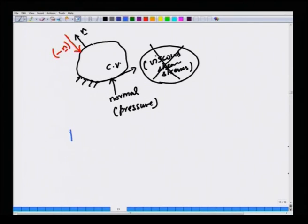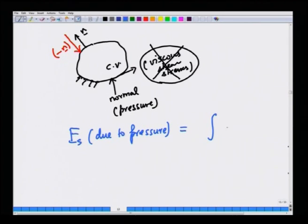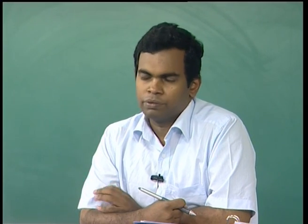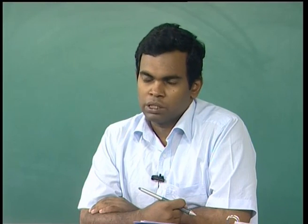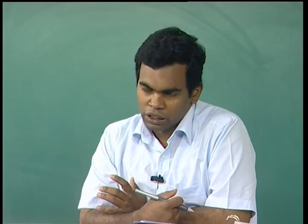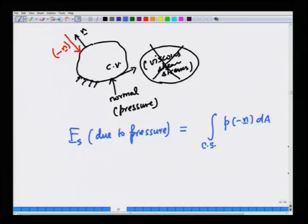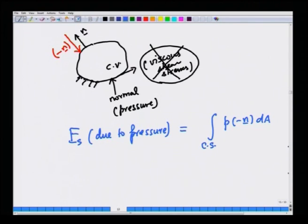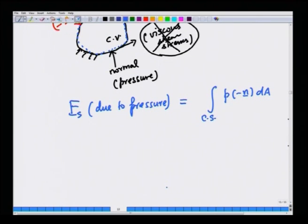To write an expression for the surface force due to pressure, we say it is the integral over the control surface of p times (minus n) dA, because pressure is just a scalar number and it tends to compress a given volume element. We explicitly put minus n when calculating the surface force, and since pressure can vary at various points along the control surface, we integrate the pressure over the entire control surface to get the total surface force due to pressure.